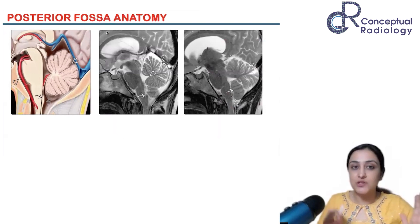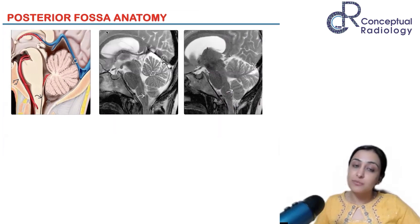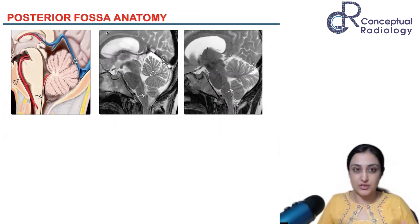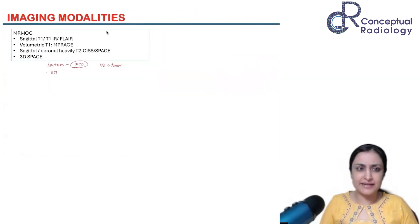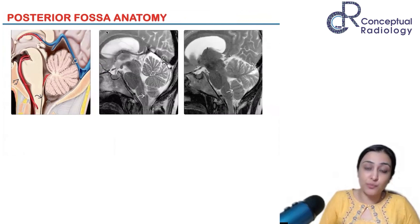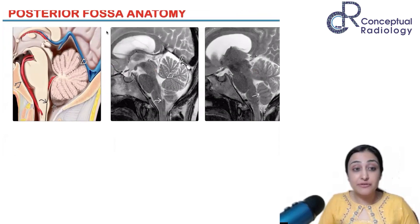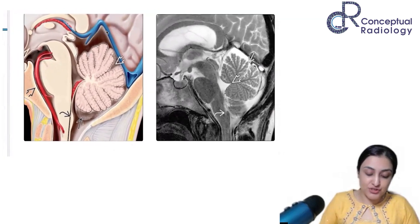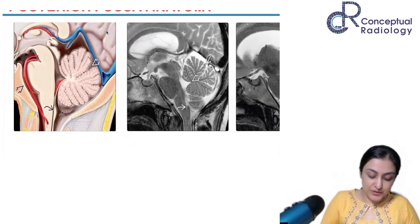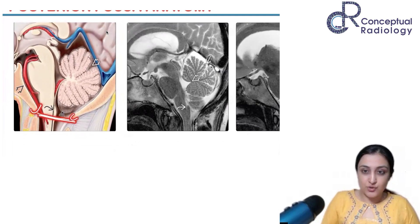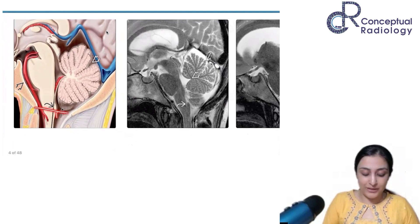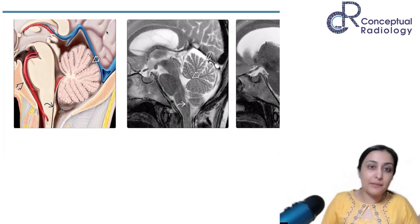The first chapter deals with posterior fossa anomalies, where the main considerations are Chiari malformations and Dandy-Walker malformations and their variants. Starting with anatomy for juniors — just to get an idea of what normal looks like: the clivus bone and the basion-to-opisthion line. The cutoff below which the tonsil should not go — it is called tonsillar ectopia if it is 5 mm or more below this line, which is abnormal. We call it tonsillar displacement and there are many differentials.